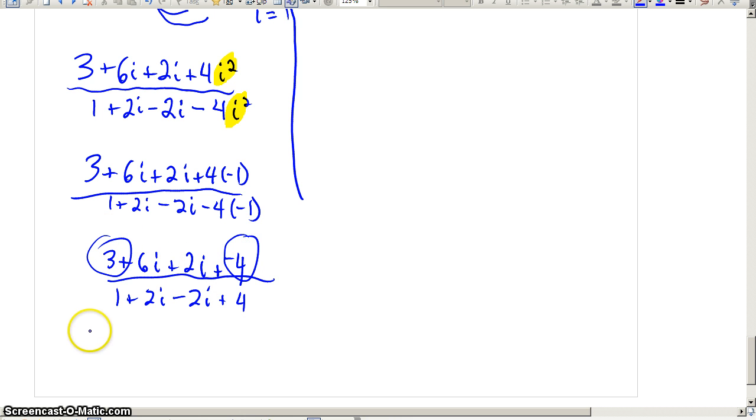A 3 and a negative 4 adds up to negative 1. A 6i and a 2i will add up to 8i. Down below, 1 and 4 add up to 5. And notice the 2i and the minus 2i cancel out. This is always going to happen down below in our denominator because we're multiplying conjugates.